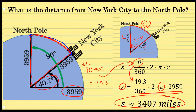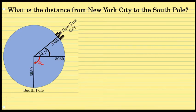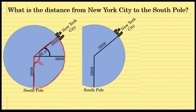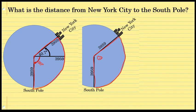Now let's talk about New York City's distance to the South Pole. To find this distance, we're going to again use a sector of a circle. This sector will be larger, as the distance from New York City to the South Pole is larger than New York City to the North Pole. The central angle is going to be larger — this time it's not the difference between 90 and 40.7. You can see that this central angle would be the sum of 40.7 and 90 degrees, because New York City and the South Pole are in different hemispheres. To find theta, we add 40.7 and 90 degrees, and that sum is 130.7 degrees.